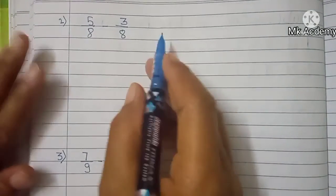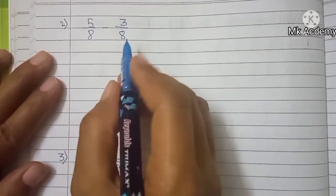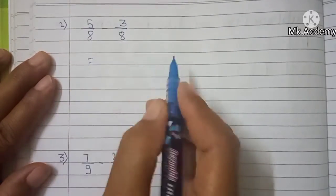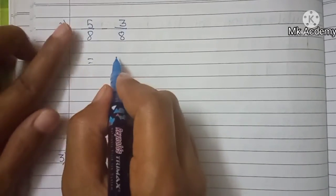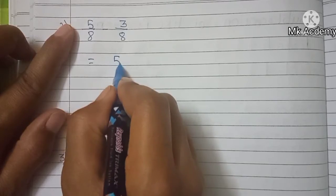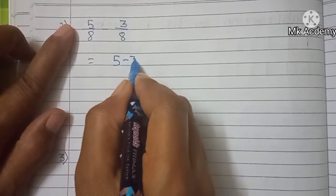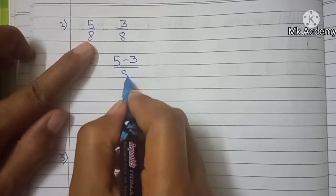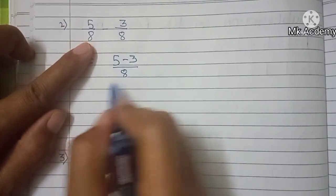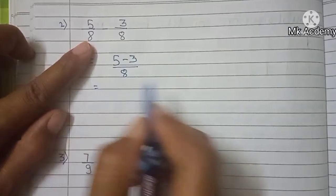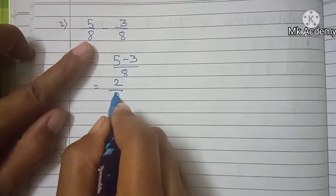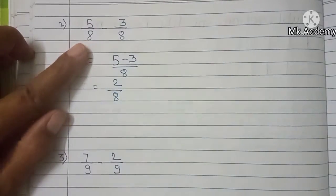We subtract these like fractions. We subtract the numerators: 5 minus 3, and write down the denominator. 5 minus 3 is 2, so the answer is 2 upon 8.